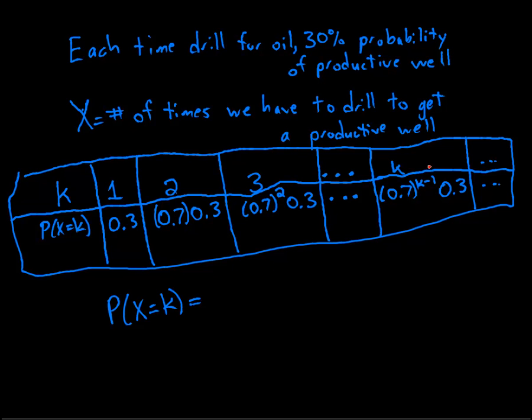So the probability that x equals k, well, I already came up with that formula here. It's 1 minus p to the power of k minus 1 times p. In this case, our probability of success is 0.3. And I need to signify multiply, so I'll just put a dot right there.